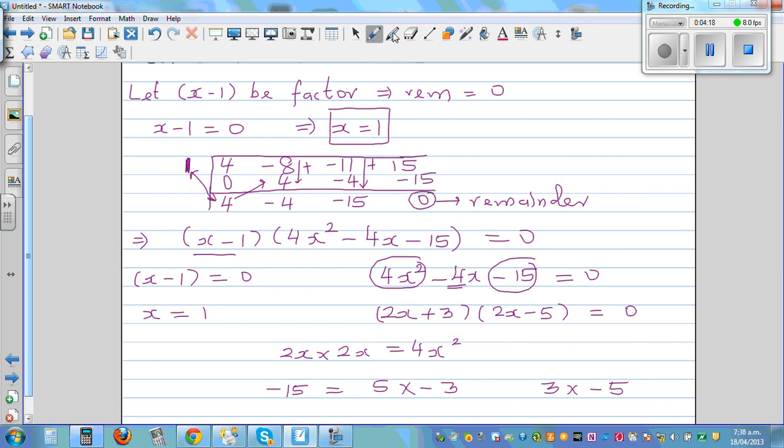See, 3 times negative 5 is minus 15. You should also always check. Don't be confident. This is 3 times 2x is 6x, and 2x times minus 5 is minus 10x. Can you see these two? If this is 6x minus 10x is minus 4x. And that's what you have to check.